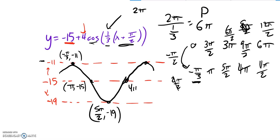This one will be 4 pi, negative 15. And the last one will be 11 pi over 2, negative 11. So there's my sketch of it right there.